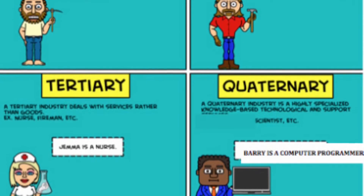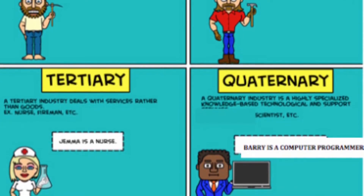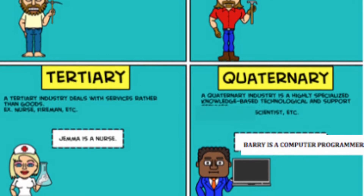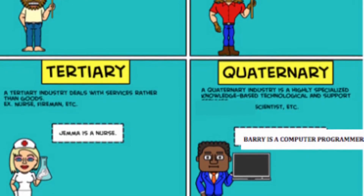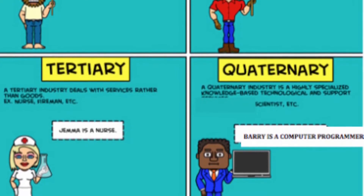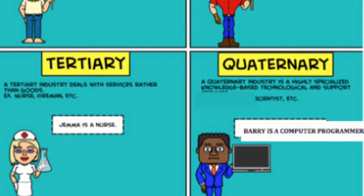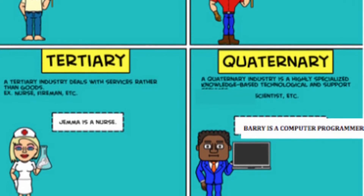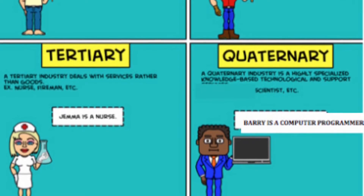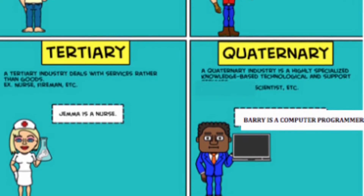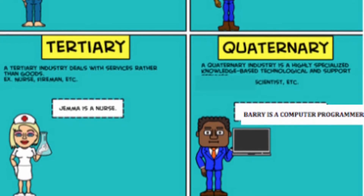Tertiary economic activities are the economic activities of the service industry. These dominate post-industrial societies and more developed nations — this is where most workers are located. Then you have quaternary economic activity, which is where research and development, management and administration, and the processing and dissemination of information are located. These are your professionals.